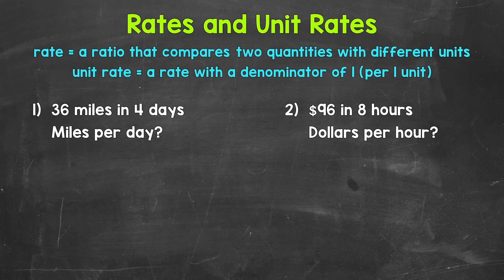We can write this rate as a fraction. Now, order matters. We have miles and then days. So our fraction needs to represent that order: 36 miles in 4 days. Make sure to label and include units within rates, since we are working with different units. We need to be clear what those units are. So this is a rate, 36 miles in 4 days.